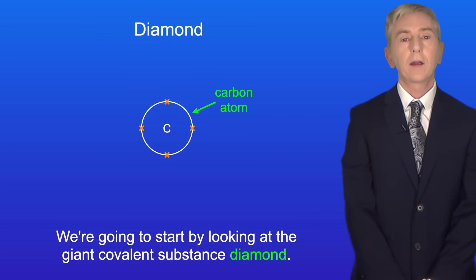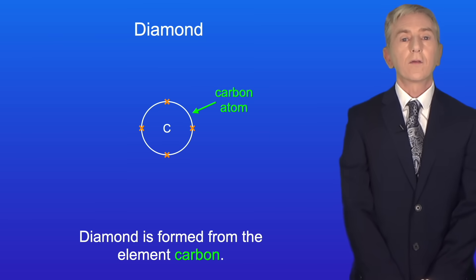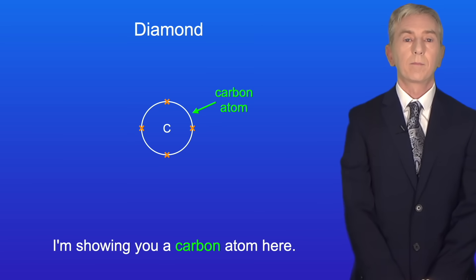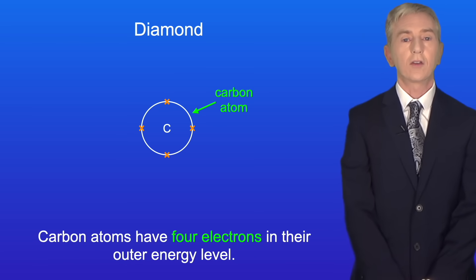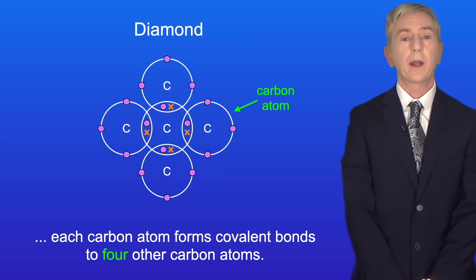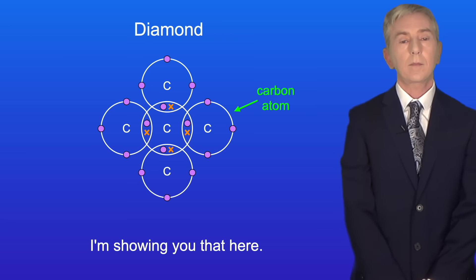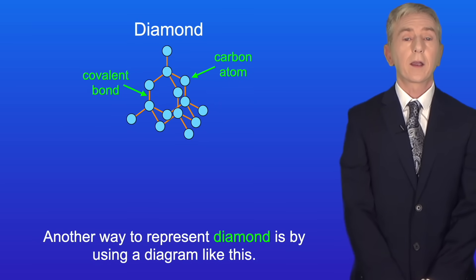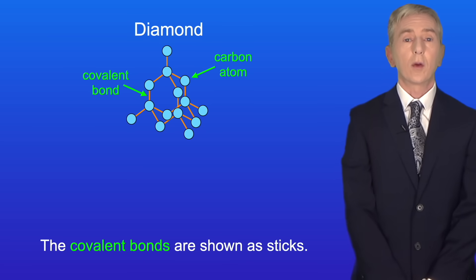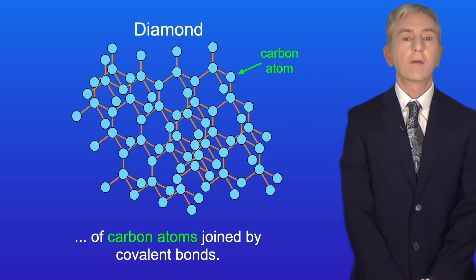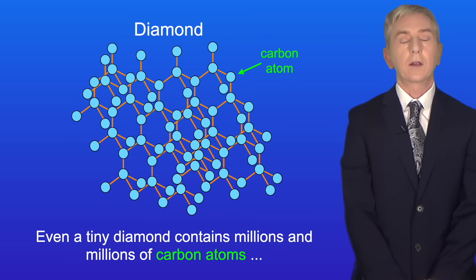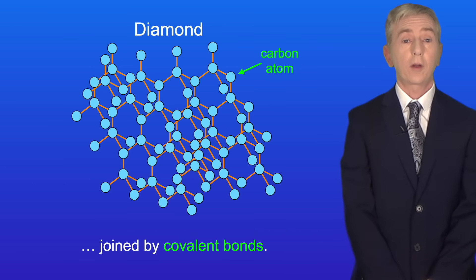We're going to start by looking at the giant covalent substance diamond. Diamond is formed from the element carbon — it's really important that you learn that. Carbon atoms have four electrons in their outer energy level. In order to achieve a full outer energy level, each carbon atom forms covalent bonds to four other carbon atoms. Diamond can also be represented using a diagram where carbon atoms are shown as circles and the covalent bonds are shown as sticks. A diamond contains a huge number of carbon atoms joined by covalent bonds — even a tiny diamond contains millions and millions of them.